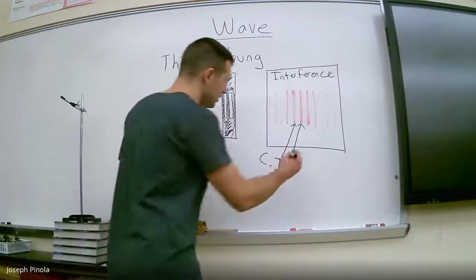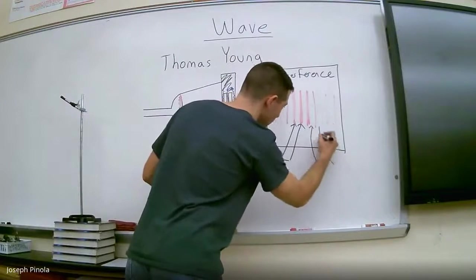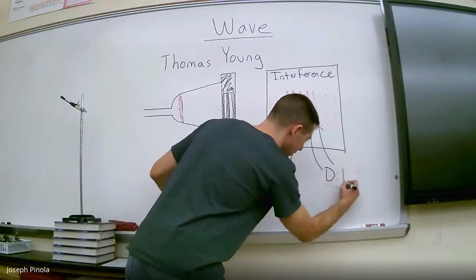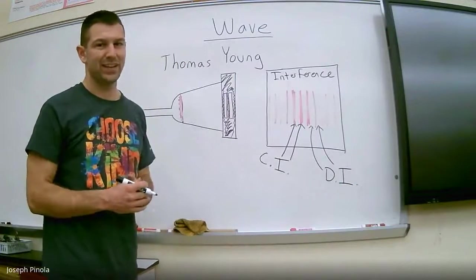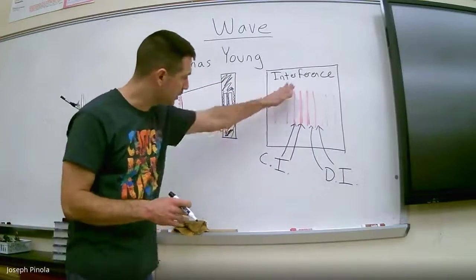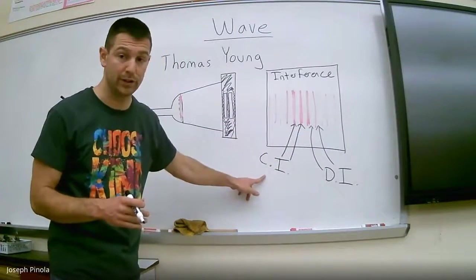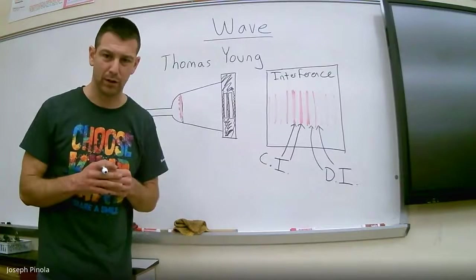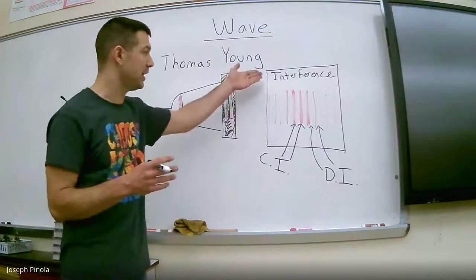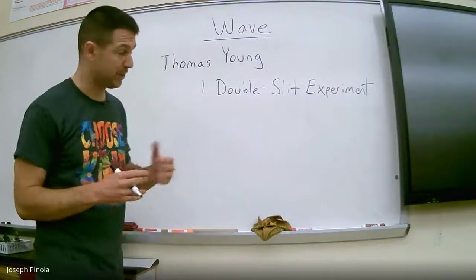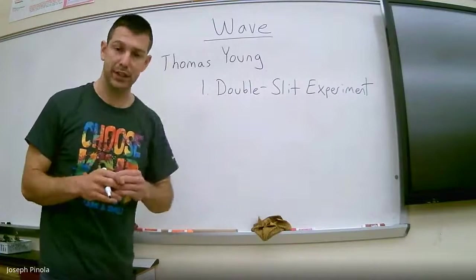And he said the areas where he noticed these strips of red were areas of constructive interference, which I'll abbreviate CI. And he said that the areas where there were gaps between the strips were, you guessed it, areas of destructive interference. And so Thomas Young made the claim that if light can interfere with itself and cause these strong colored bands of constructive interference and also these gaps of destructive interference, that light can't behave like individual little particles. He said that light must be a wave because it can interfere with itself. But that wasn't the only piece of evidence that Thomas Young used.